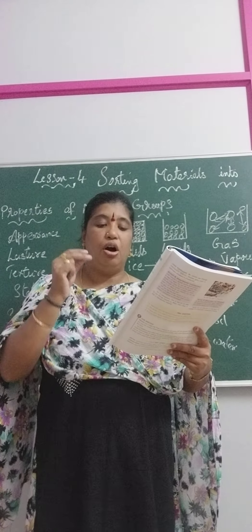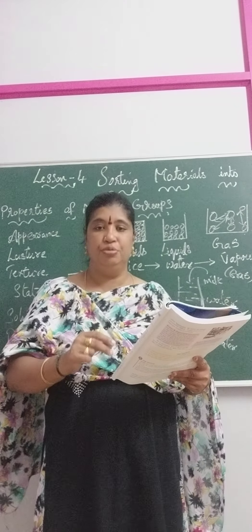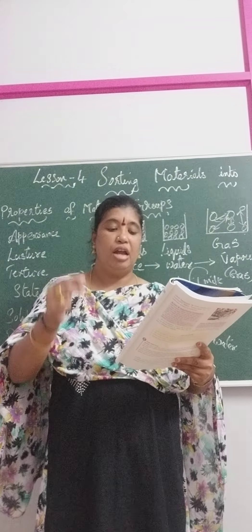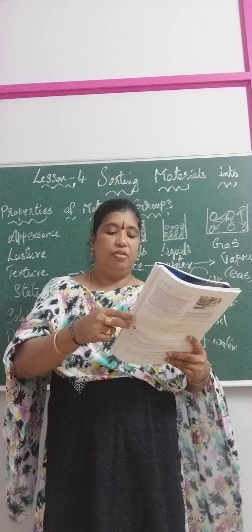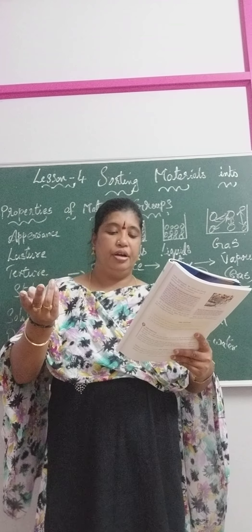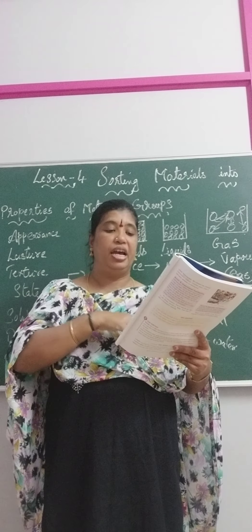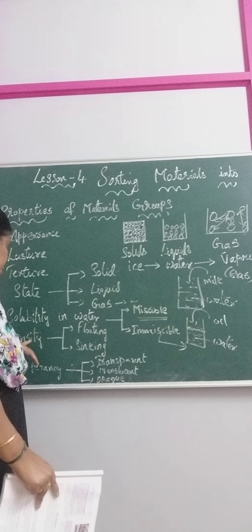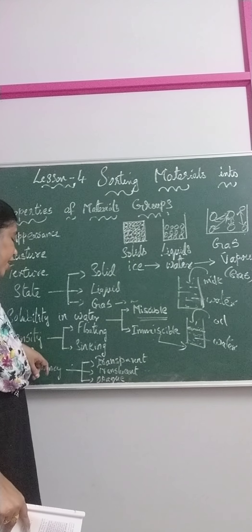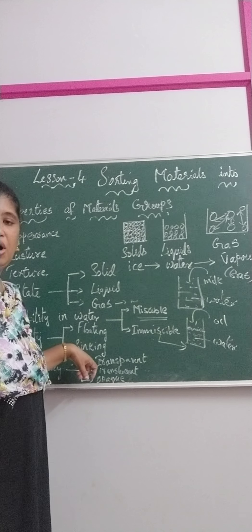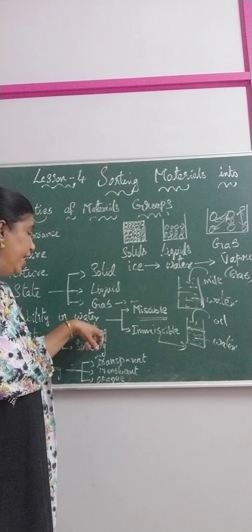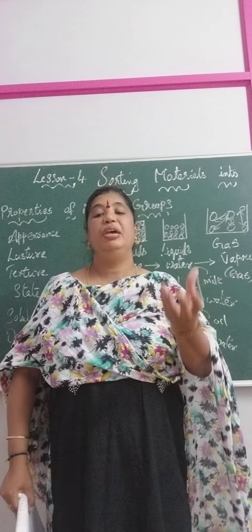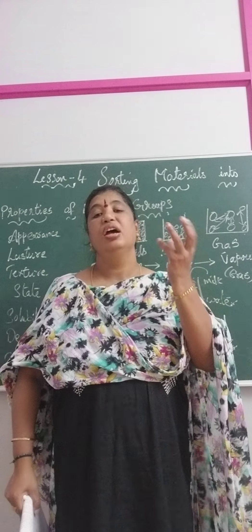Any substance occupying some volume is called density. Now here both the volumes can be same sometimes, and volumes also can change. Now depending upon the volume, density is divided into two types. Some objects will float and some objects will sink because the volume of the object may be heavy or light.